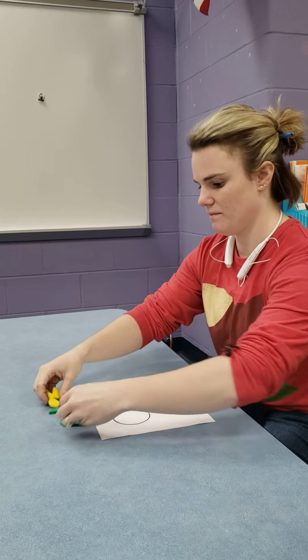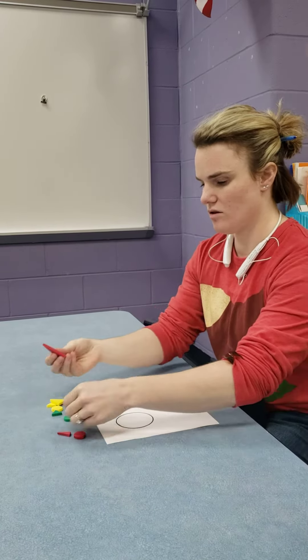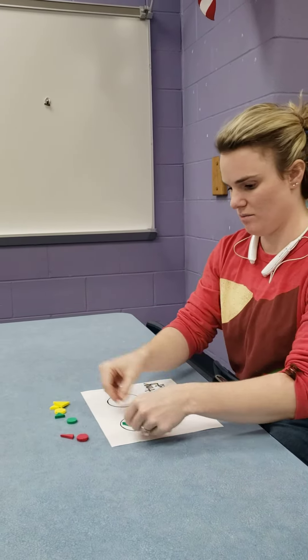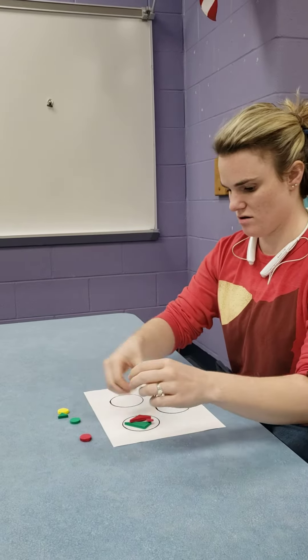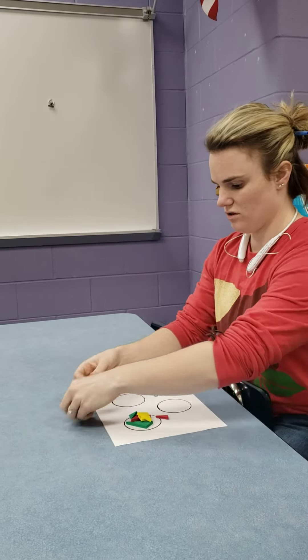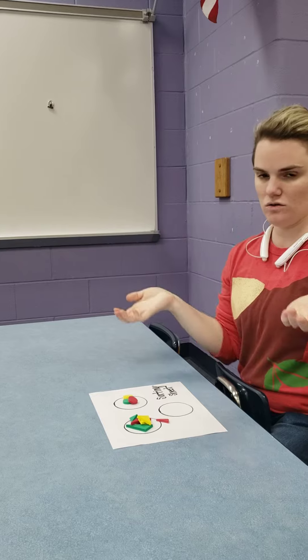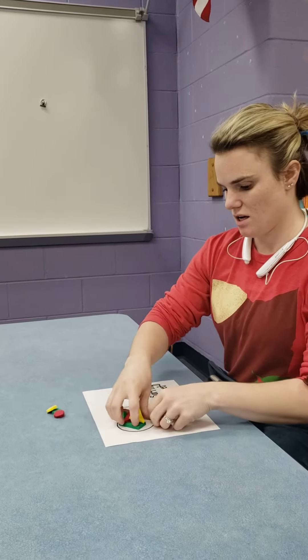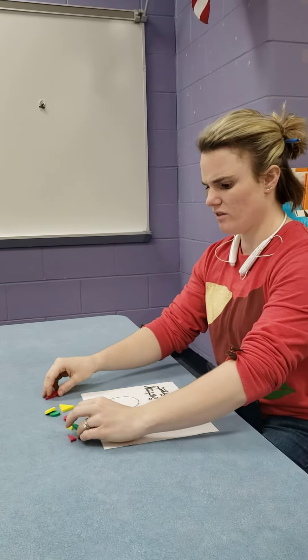If they see that these are all triangles and put the triangles together and the circles together, then they sorted them by shape.